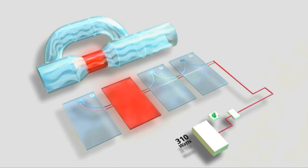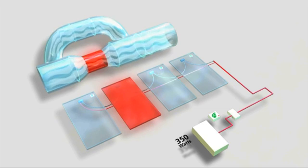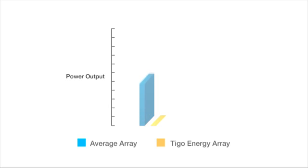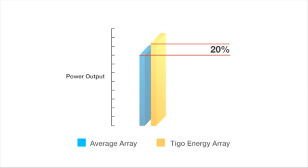The underperforming module will continue to contribute its power to the string, but will not restrict the flow of the other modules. By using the Tygo Energy Maximizer to prevent underperforming modules from restricting the output of other panels, a solar array can produce up to 20% more energy.